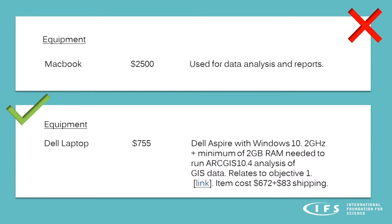Here are two example requests for equipment. Above is a bad example — a request for a MacBook. The cost is $2,500 and the description says 'used for data analysis and reports.' Below is a good example: a request for a Dell laptop for $755, described as a Dell Aspire with Windows 10, 2 GHz processor, minimum 2 GB RAM, needed to run ArcGIS analysis of GIS data, relating to Objective 1, with a link provided and the item cost broken down as $672 plus $83 in shipping.